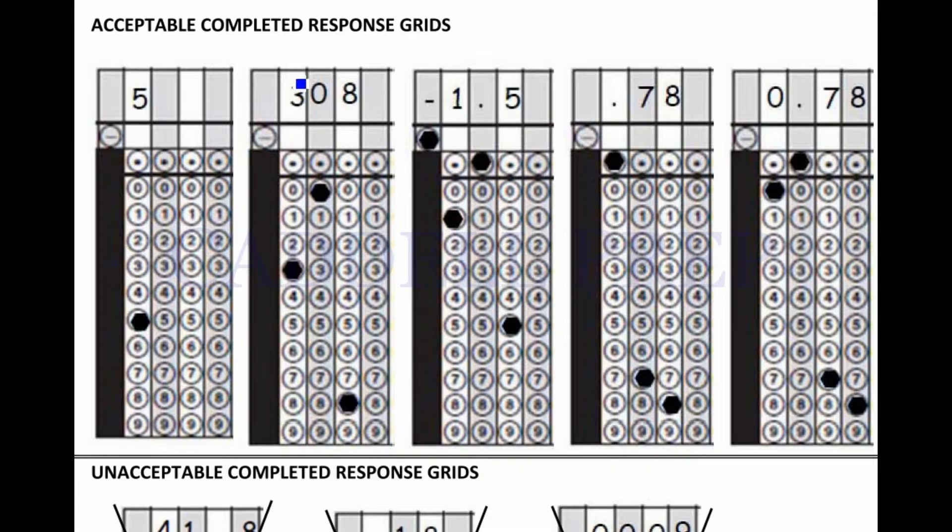If we have a larger number, we're still going to start at the first column with numbers, 3, 0, 8. And then bubble in the 3, the 0, and the 8.